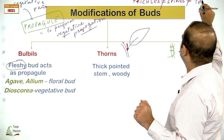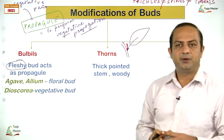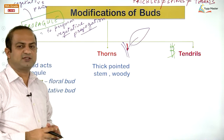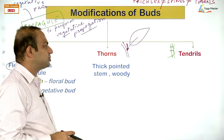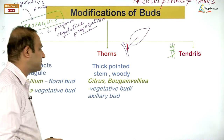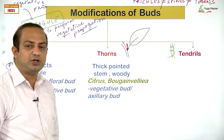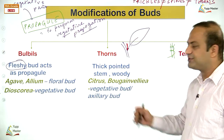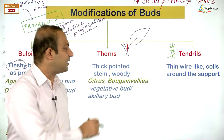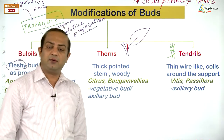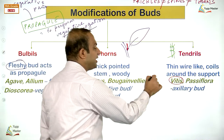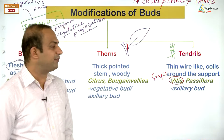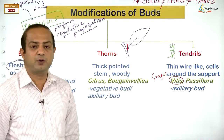Culm is a jointed stem because of its internal structure — hollow internodes and solid nodes. The reason a bansuri (flute) is made from bamboo is that bamboo is naturally hollow inside. Hollow internode and solid node is the defining character of culm. This is seen in bamboo, maize, and other monocot plants like grasses.